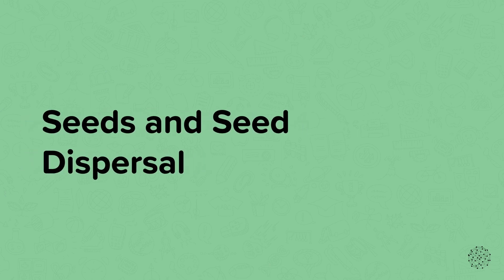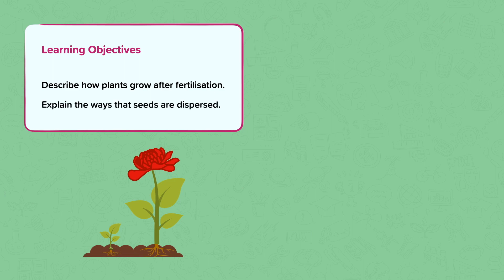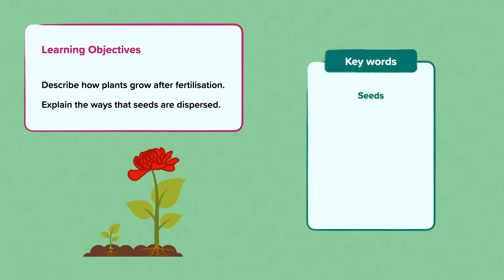Seeds and seed dispersal. The learning objectives are to describe how plants grow after fertilisation and explain the ways that seeds are dispersed. The key words for this nugget are seeds, disperse, ovary, fertilisation, fruit and explosion.